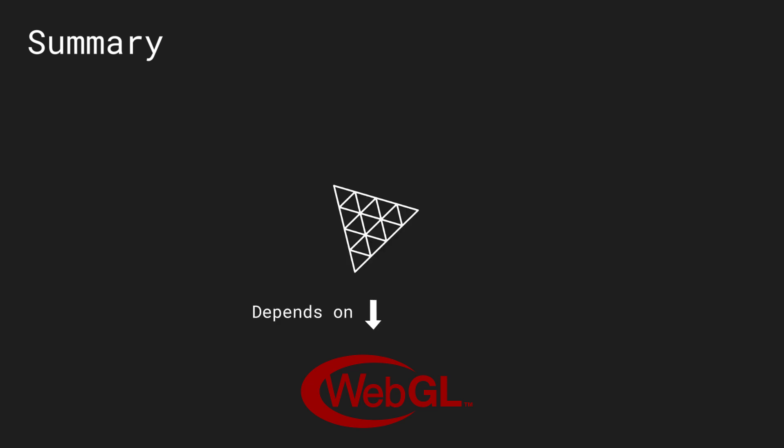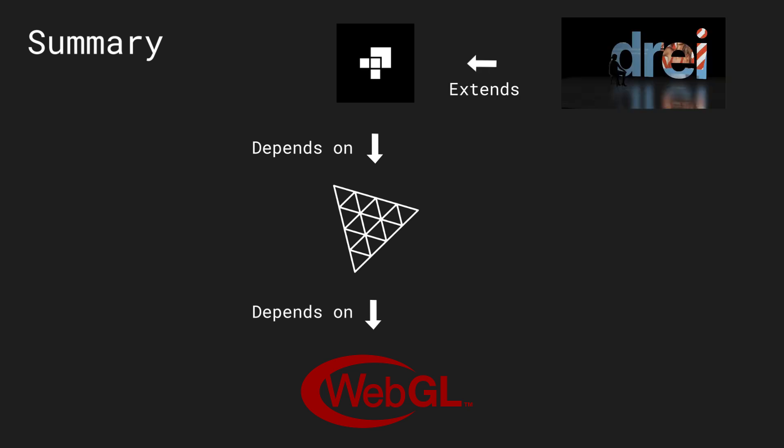To summarize: WebGL is a JavaScript API which talks directly to your GPU using the shading language GLSL. Three.js is a JavaScript 3D library which uses WebGL in the background. React Three Fiber is a React renderer for Three.js. And last but not least, React Three Drei is a collection of useful helpers, abstractions, and React components for React Three Fiber.